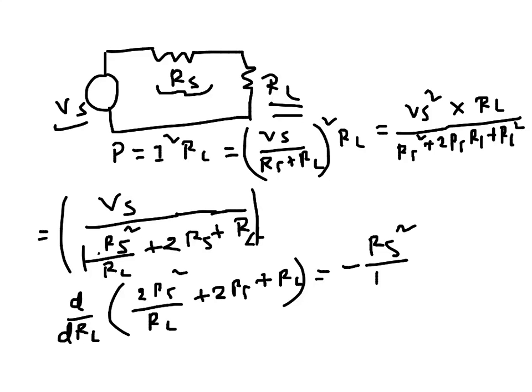Second term is zero, and this is a constant so it becomes zero. Third term is one.